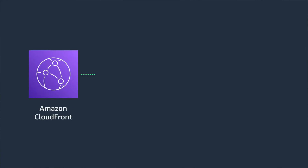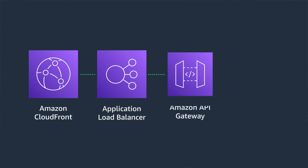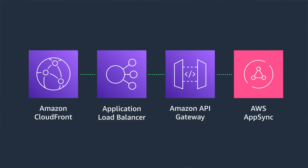To get started, you can create an AWS WAF WebACL and associate it with either your CloudFront distribution, application load balancer, API Gateway, or your GraphQL APIs in AWS AppSync.